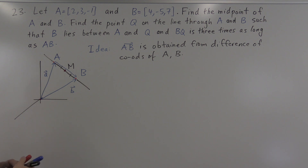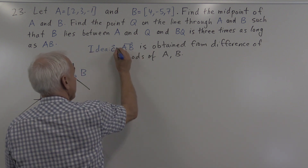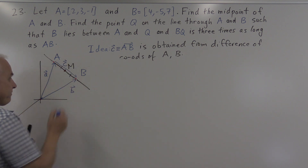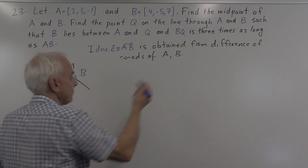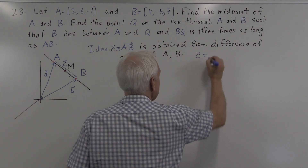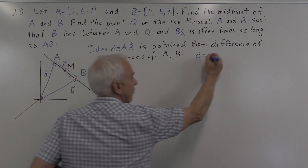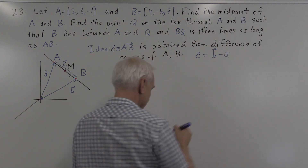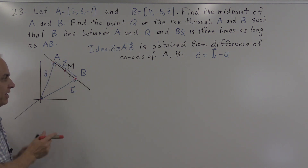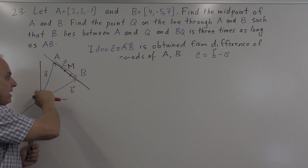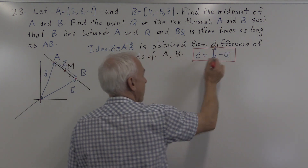Now let's call that vector something — let's call it c. We have the vector a in this direction, vector b here, and the vector c here. In that framework we can say that c is equal to, in terms of these vectors, final minus initial — so it's b minus a. This is a very convenient way of working with vectors: the vector from A to B is obtained by taking the difference between the coordinate vector of b and the coordinate vector of a.